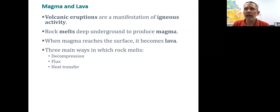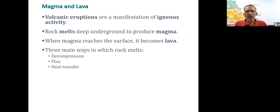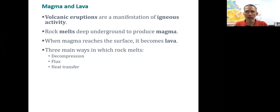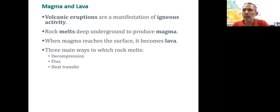When we start looking at igneous rocks, the word igneous means 'from fire.' Igneous rocks either come from magma, which is in the ground and contains dissolved gases, or from lava, which has reached the surface.